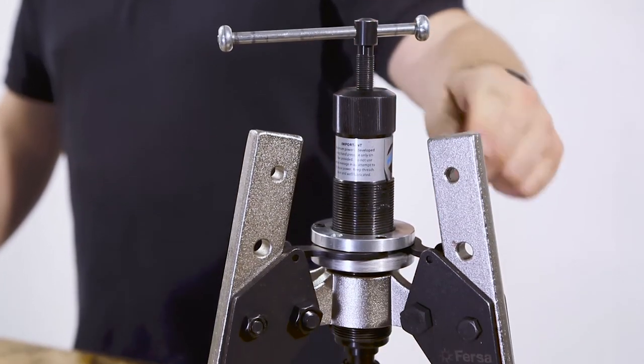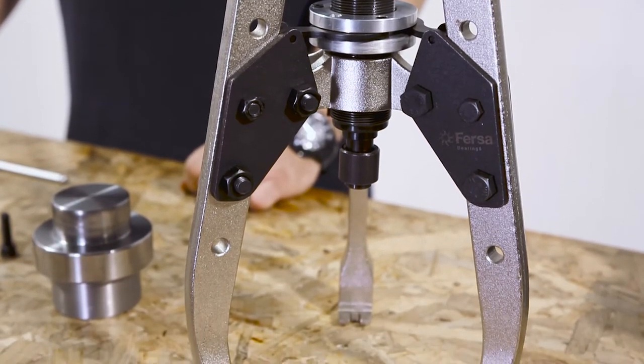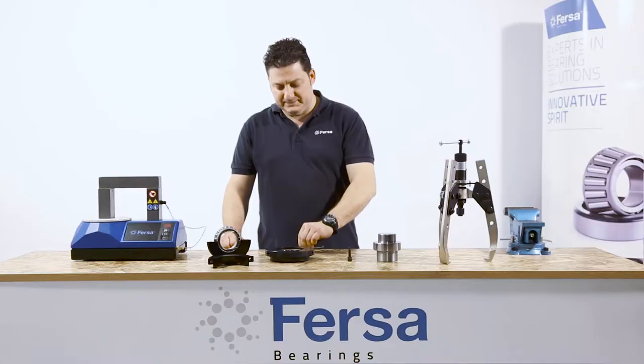We will need a claws extractor, in this case we will use a special one from FURSA bearings, an allen wrench, and our extractor tool.